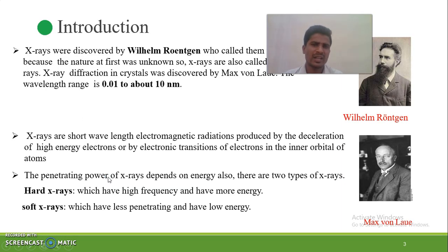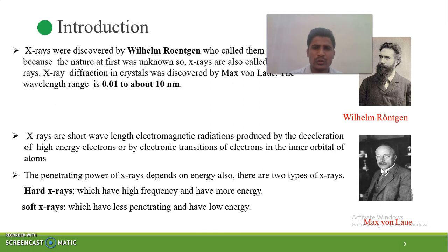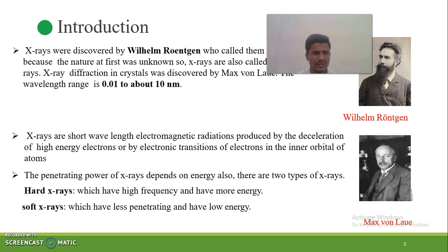What are X-rays? X-rays are short wavelengths, first noticed by Wilhelm Röntgen, who established that X-rays have very short wavelengths. The size ranges from 0.01 nanometers to about 10 nanometers. The contributions to X-rays are by Wilhelm Röntgen and Max von Laue, who gave two types of X-rays: hard X-rays and soft X-rays.